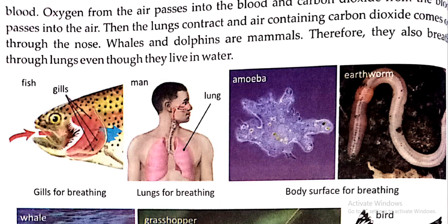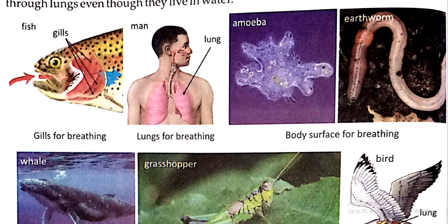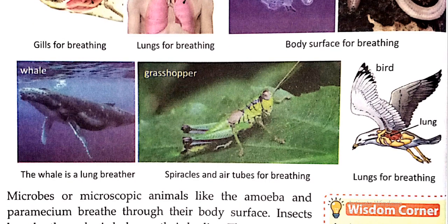Whales and dolphins are mammals. Therefore, they also breathe through lungs even though they live in water. मतलब जो पानी में रहते हैं उनको lungs नहीं होते — ऐसा नहीं है. Whales and dolphins ऐसे mammals हैं जो lungs के through breathing करते हैं. यहाँ देखो fish है, वो breathing करती है gills के through — उसकी gills यह छोटे-छोटे dots हैं. And this is amoeba and earthworm — body surface for breathing. Grasshopper spiracles and air tubes for breathing use करता है.